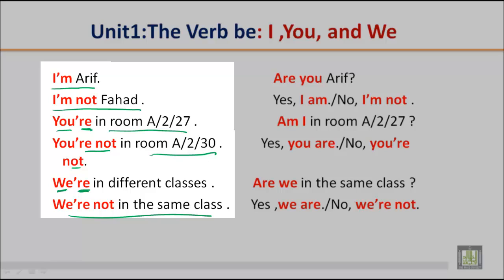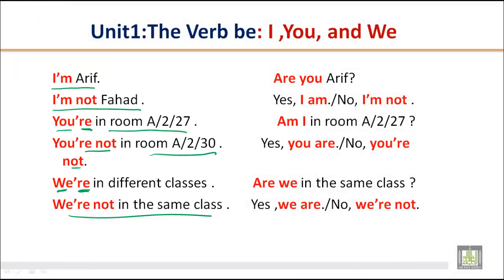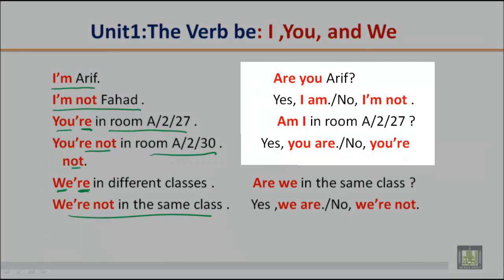To frame a question — for example, to confirm 'I am RF' — you ask: 'Are you RF?' If you are RF, you answer: 'Yes, I am.' If you are not, you say: 'No, I am not.' For 'You are in room A to 27,' the question becomes: 'Am I in room A to 27?' The answers are: 'Yes, you are' or 'No, you are not.'